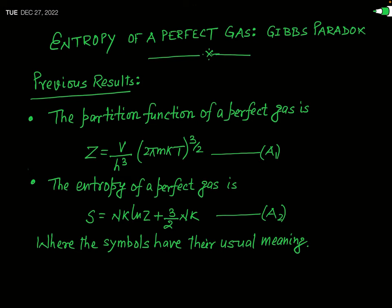To understand what this Gibbs paradox is and how it was resolved by Gibbs, you have to remember what you learnt in the previous lectures. In the previous two lectures we discussed two important facts. One important fact is the partition function of a perfect gas, which is given by Z = (V / h³)(2πmkT)^(3/2).